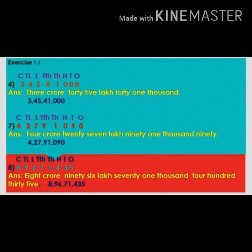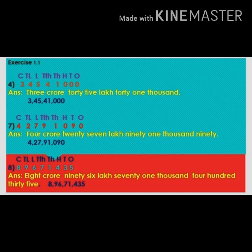Question number seven: 4,42,79,090. The same way, first write the place values above the number — ones, tens, hundreds, thousands, ten thousands, lakhs, ten lakhs, crores. Now we write the number name: four crore, 27 lakhs, 91 thousand, 90. In the hundreds place we have zero. According to the period we put the commas: 4 comma 27 comma 91 thousand comma and 90.